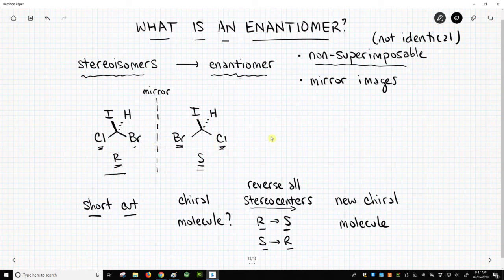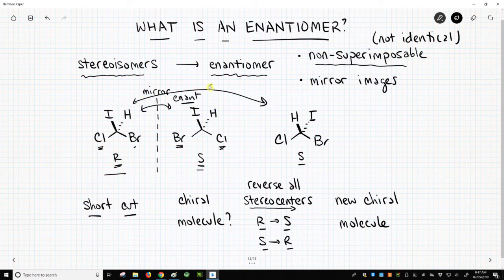We could also draw this a little bit differently. Let's go back to our R structure, and let's exchange the hydrogen and the iodine. This should also have the S configuration because we started from the R and we swapped two groups. So, these are enantiomers of each other. These are enantiomers of each other.